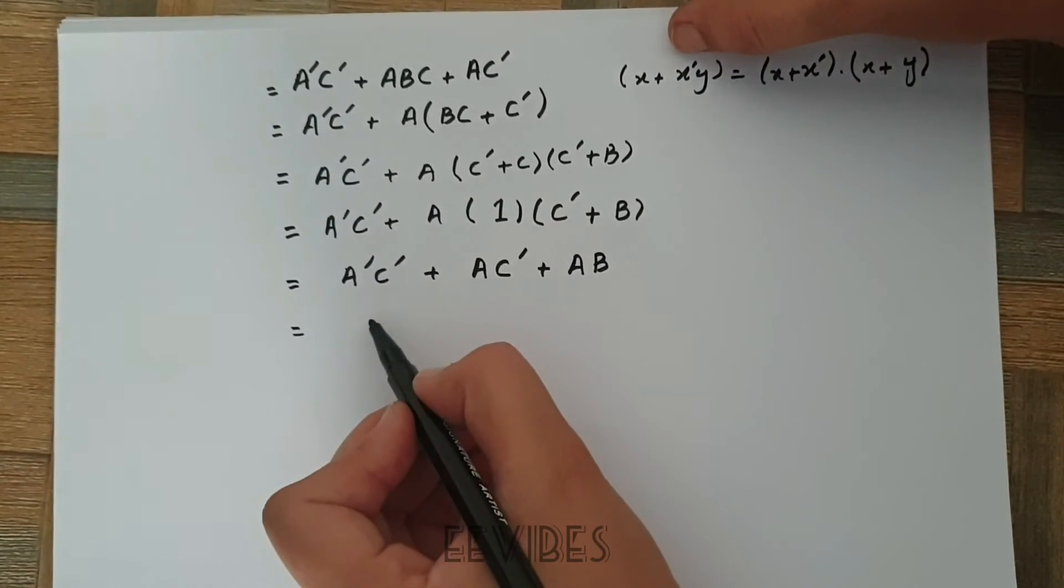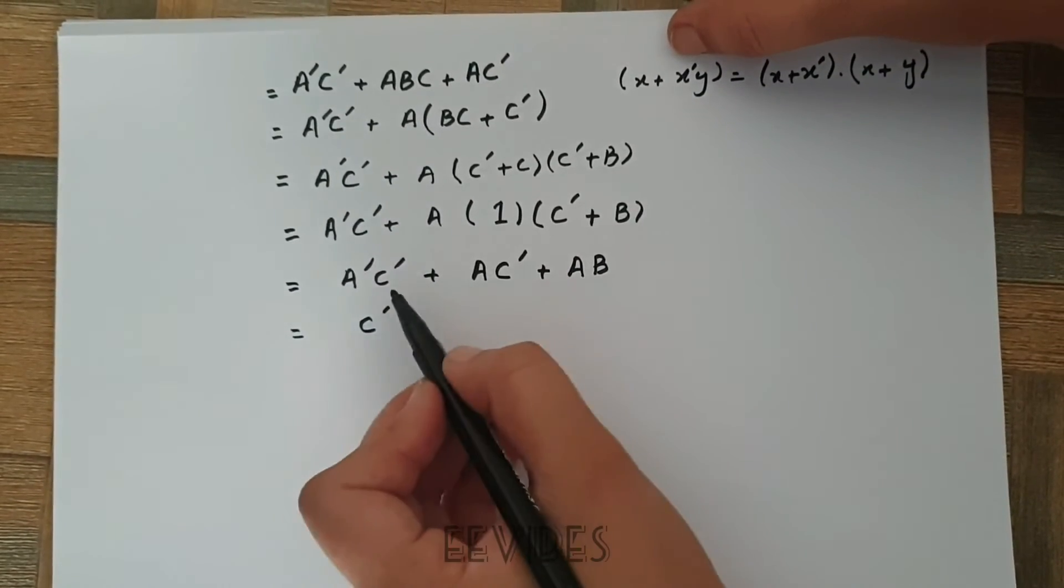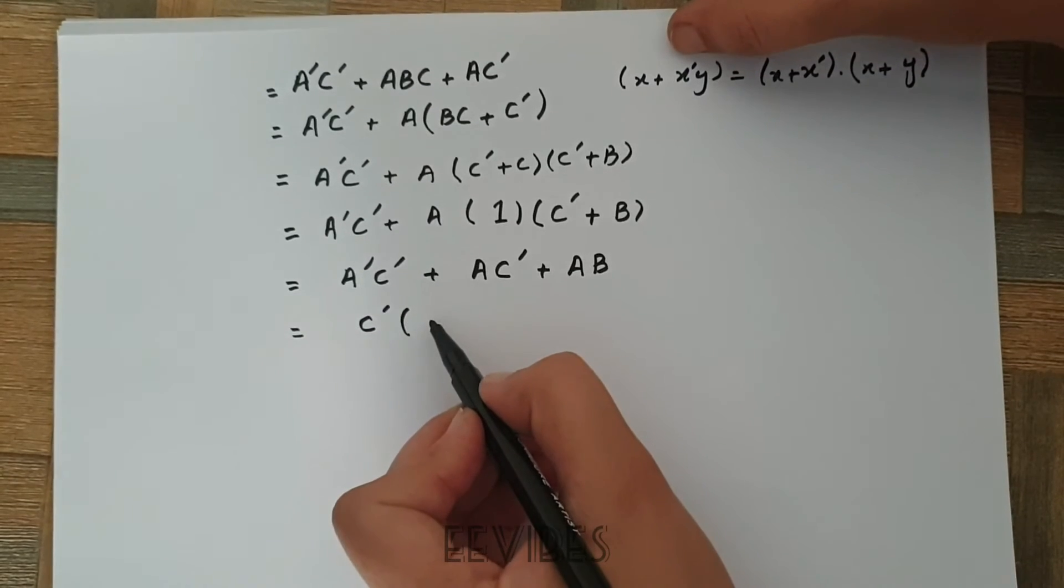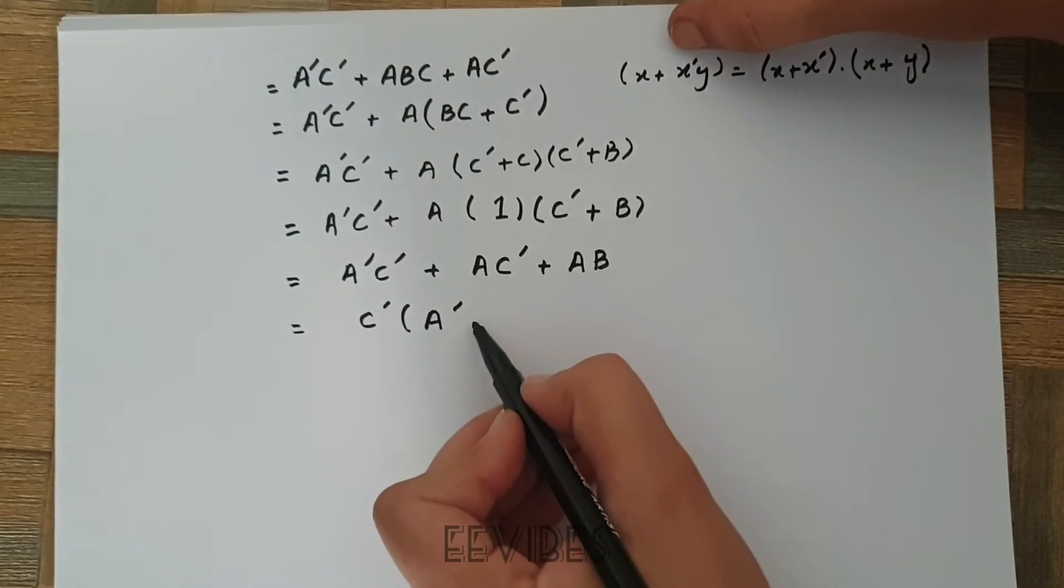Now you can take C complement common from these two terms, and the remaining expression will be A complement plus A plus AB.